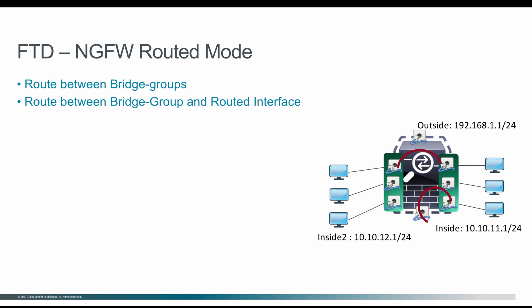Similarly, you can have multiple bridge groups. As you can see here, three of the interfaces are in one bridge group which is inside two, with IP network 10.10.12.1. On the other side, you have inside one network which has three interfaces connected to three different devices in the 10.10.11.0 network. And you have one interface on the outside. In this setup, you have two bridge groups: one is inside two and the other bridge group is inside one.